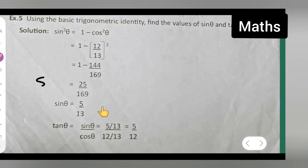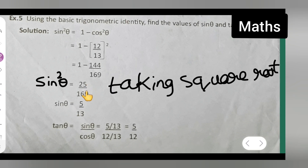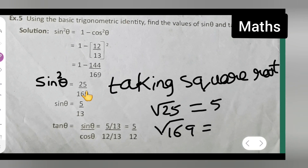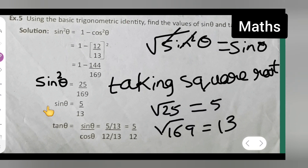Now this was your sin square theta. You have to take the square root of both sides. Taking the square root: sin theta is equal to the square root of 25 upon 169. Square root of 25 is 5, and square root of 169 is 13. The square on sin square theta gets cancelled, giving you sin theta equal to 5 upon 13.